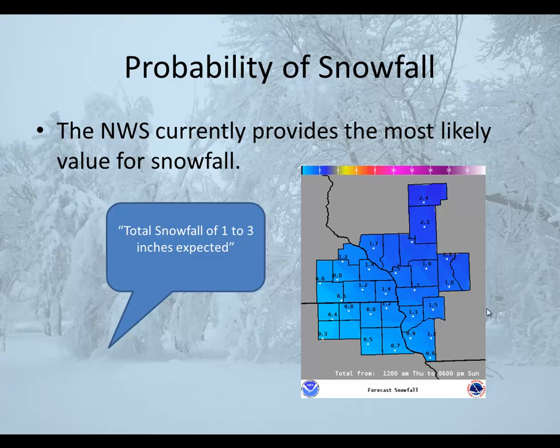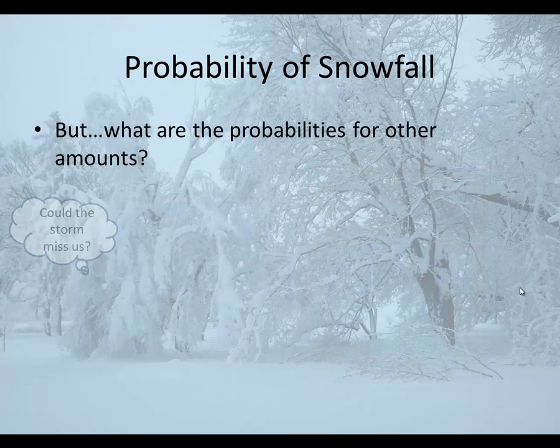The National Weather Service currently provides the most likely value for snowfall for a given storm. Those most likely values are what appear on our products and services that most people find on the web, for example.